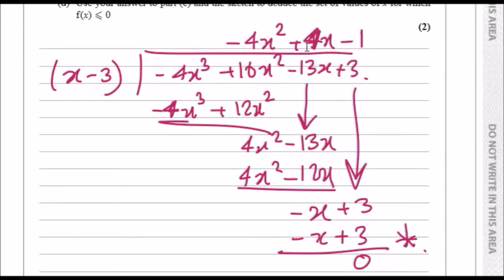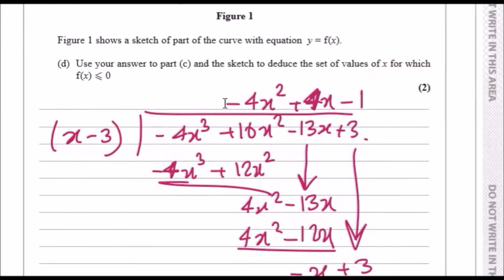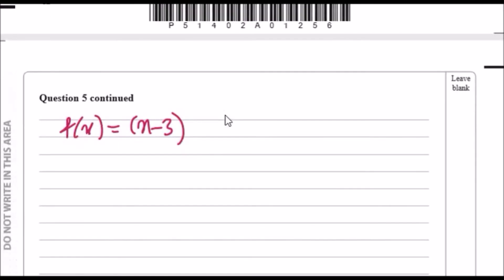Going back to this one, we can say therefore f(x) equals x minus 3 times the new quadratic term, so minus 4x² plus 4x minus 1. Now we just have to factorize this one.